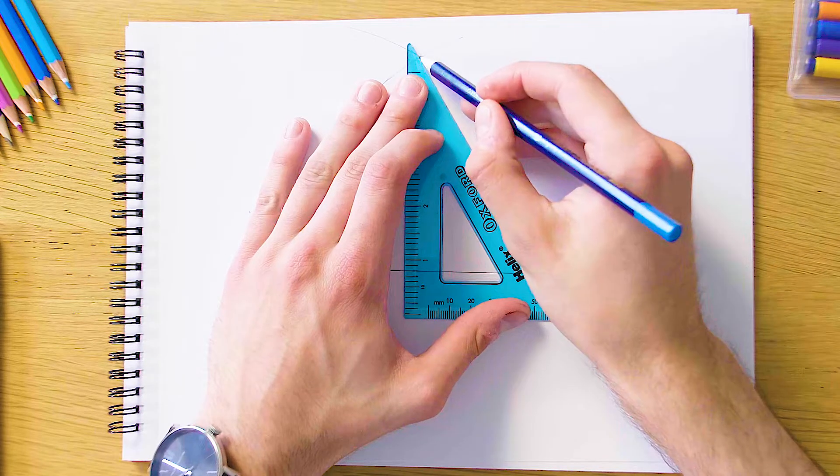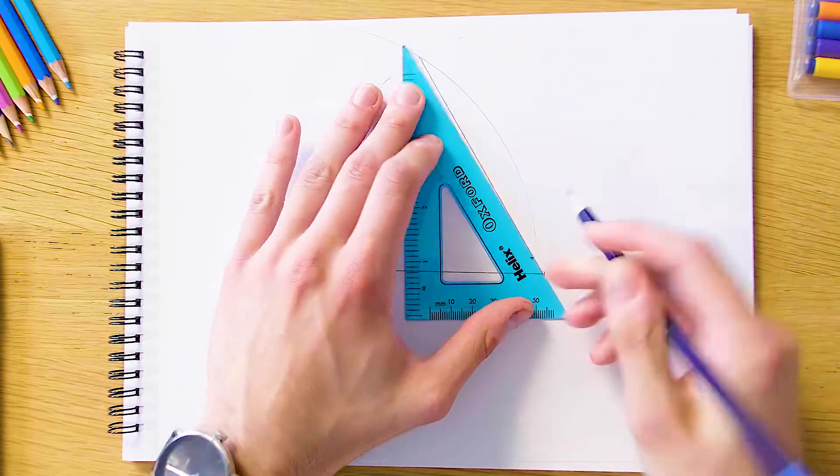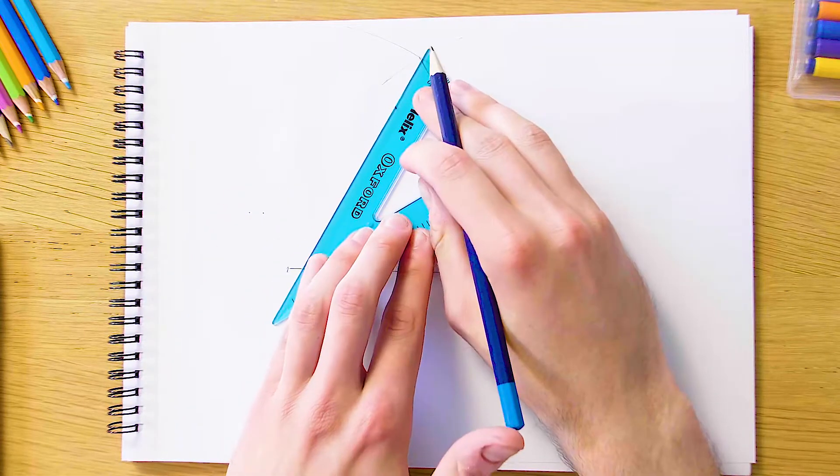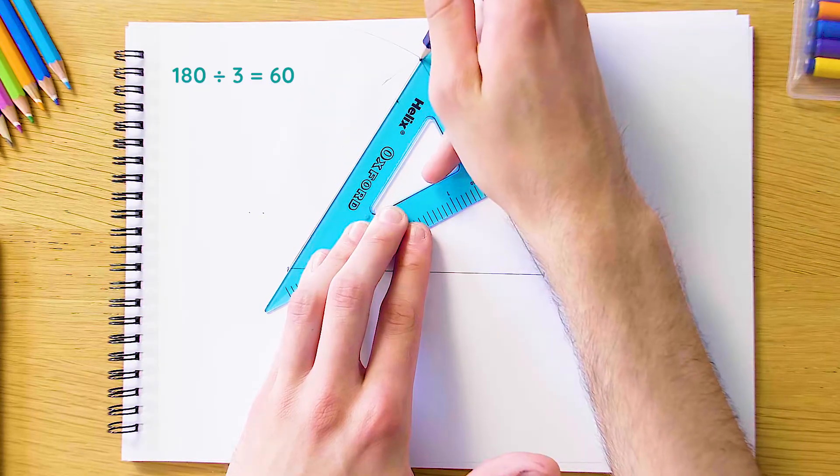And the thing about a triangle with three equal sides is it also has three equal angles. And because there are 180 degrees in a triangle, that means that each of our angles is equal to 60 degrees. And that's what we've been asked to construct here.